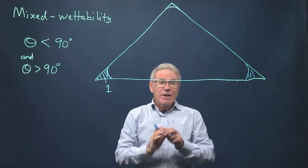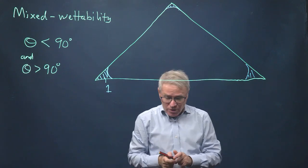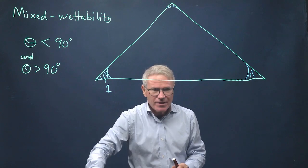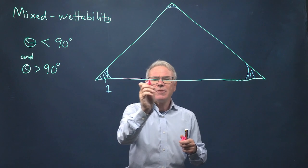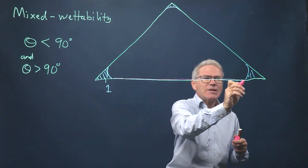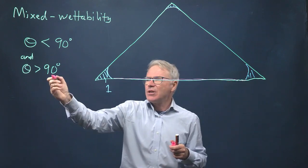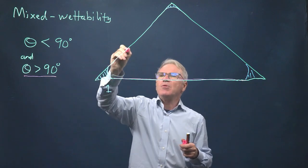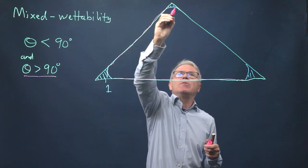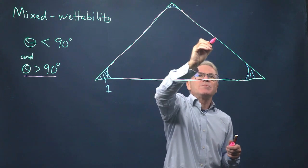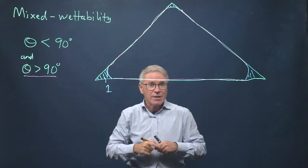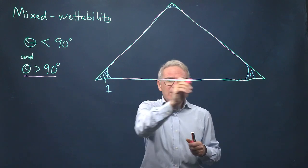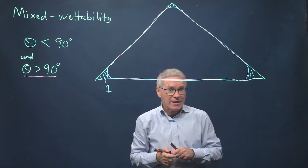Now imagine that there's a wettability alteration, and so the surfaces that have been in direct contact with phase two change their wettability. We're going to assume they change their wettability so that in this particular pore, the contact angles are greater than 90. So we'll call this here, these are regions where that contact angle is greater.